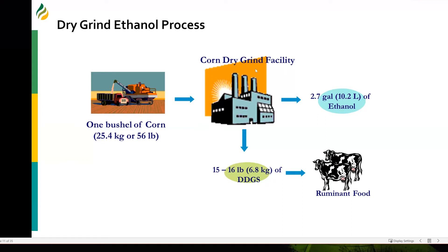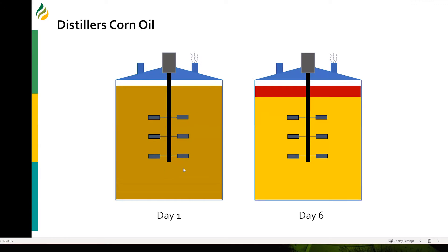Saccharification and fermentation is a very lengthy process, varying anywhere from 40 to upwards of 70 hours. In one dry grind plant, there was a technical issue and they had to shut down the entire plant. Typically, here's a fermentation tank on day one. On day six, when they went back to restart the plant, they noticed a thick layer of oil sitting on top of the fermentation tank.